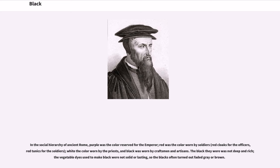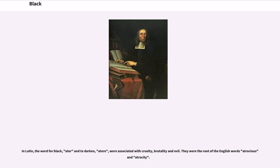In the social hierarchy of ancient Rome, purple was the color reserved for the emperor, red was the color worn by soldiers, white the color worn by the priests, and black was worn by craftsmen and artisans. The black they wore was not deep and rich; the vegetable dyes used to make black were not solid or lasting, so the blacks often turned out faded gray or brown. In Latin, the word for black, ater, and to darken, were associated with cruelty, brutality and evil. They were the root of the English words atrocious and atrocity.